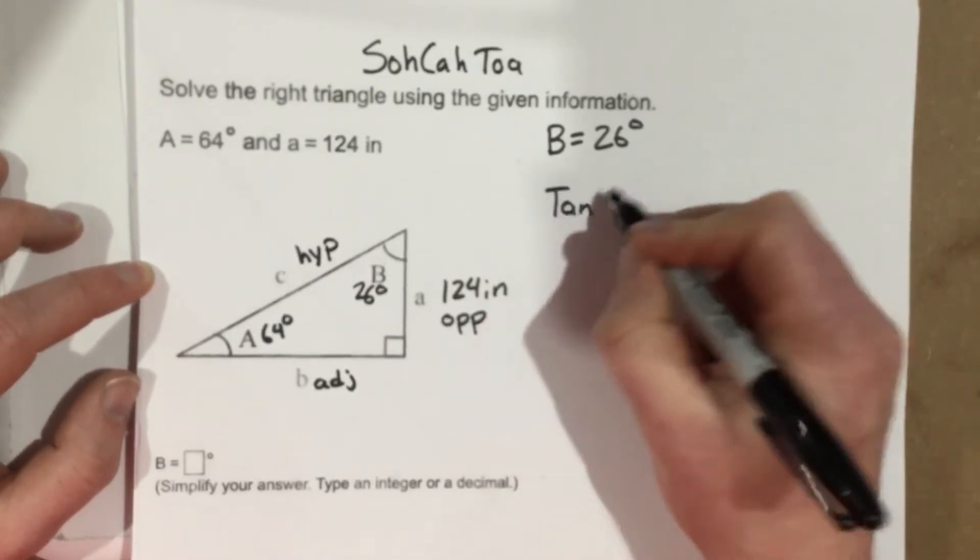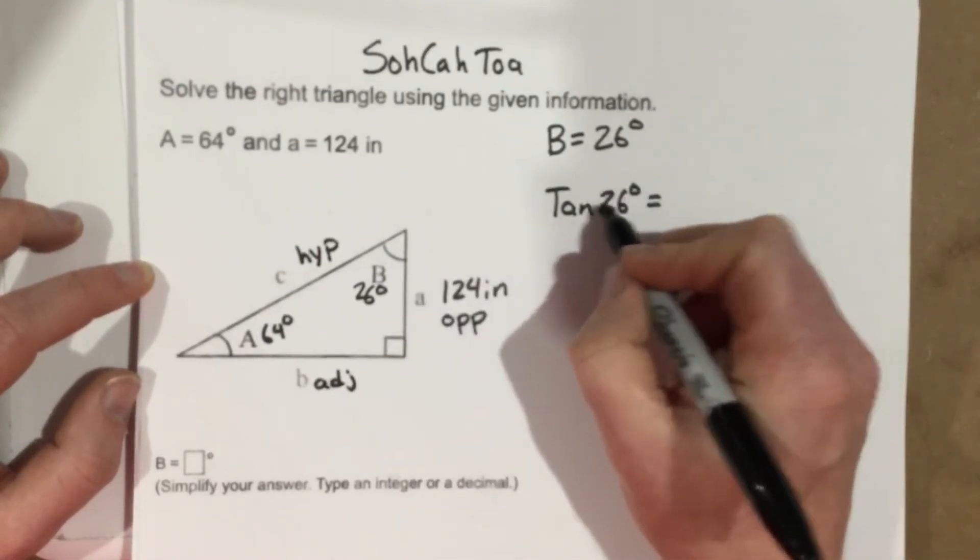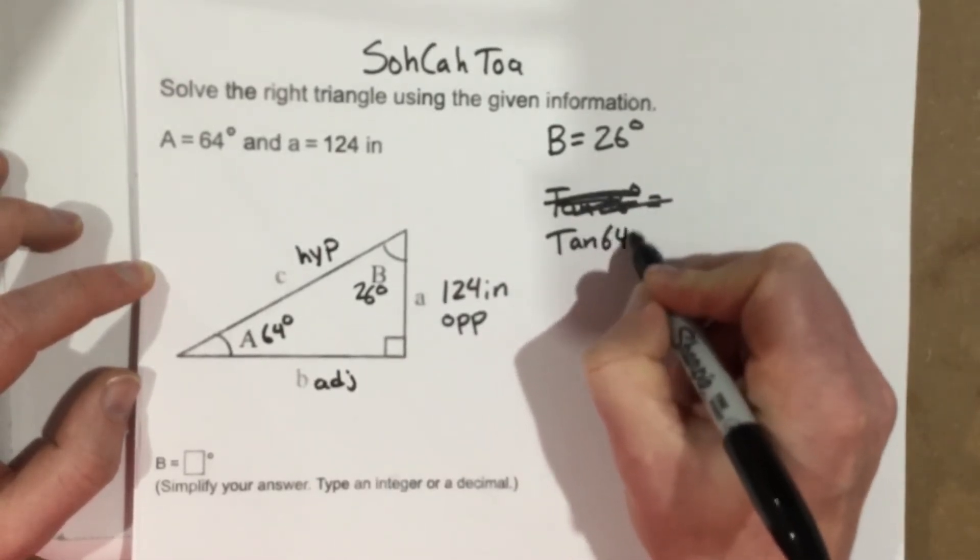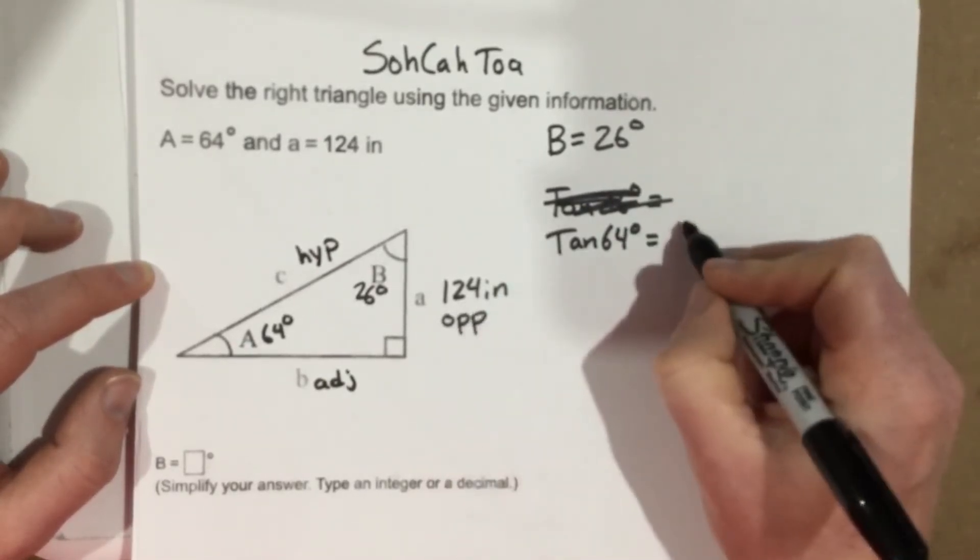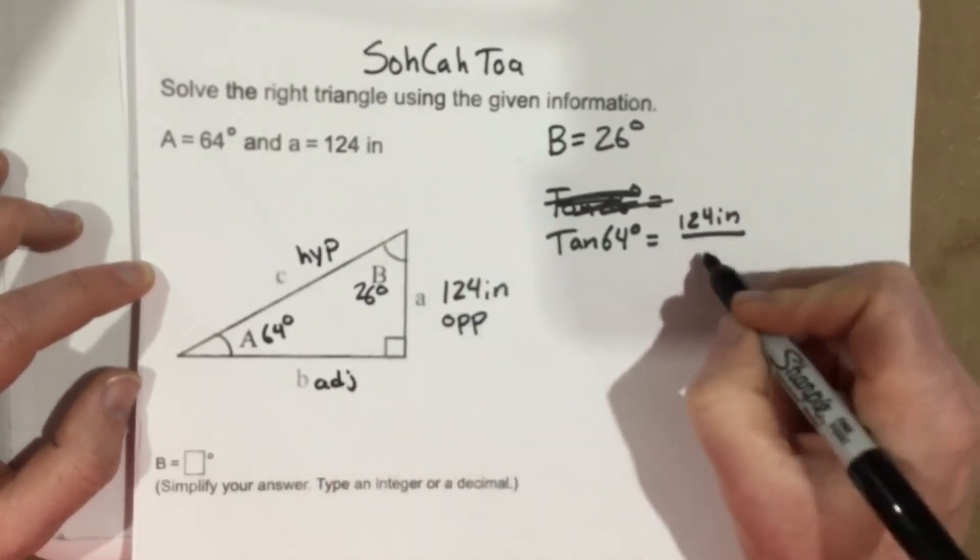26 degrees equals, oh not 26, 64 degrees, my bad. So tangent 64 degrees equals the opposite, which is 124 inches, over B, which is the adjacent side.